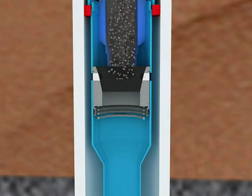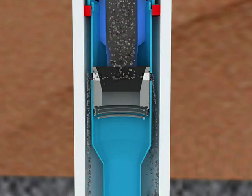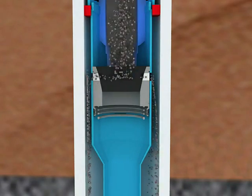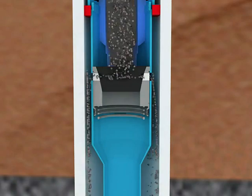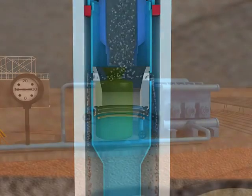In this position, gravel can be pumped into the annulus between the open hole and the screen liner column through the drilling string and the gravel setting tool.